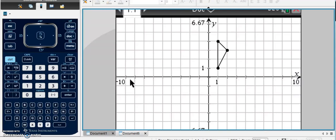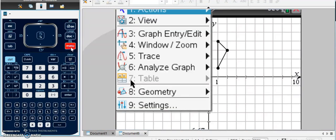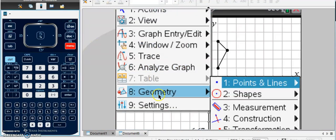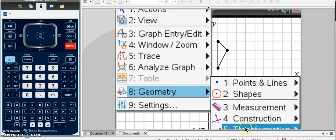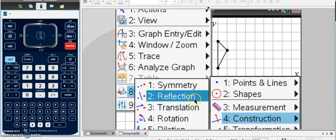Now I'm going to show you how to perform a reflection. You're going to go to Menu, Geometry, Transformation, and then choose Reflection.